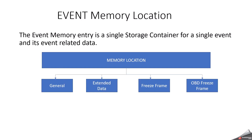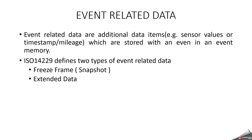Event Memory Location: When an event or fault occurs, it must be stored in a particular memory location. Generally, a memory location contains event ID, time ID, fault counter, aging and occurrence counter. Extended data has multiple entries (extended data 1, 2, 3) and freeze frame has multiple freeze frame data entries including OBD freeze frame. The event memory is a single storage container for a single event and its event related data. Event related data are additional data items — for example sensor values, timestamp, or mileage — stored with an event. According to ISO 14229, two types of event related data are defined: freeze frame (also called snapshot records) and extended data.